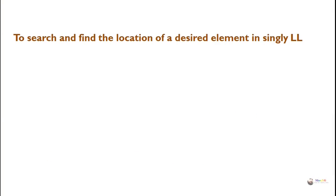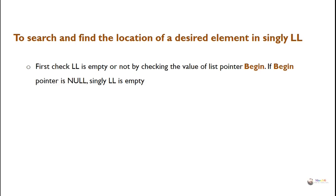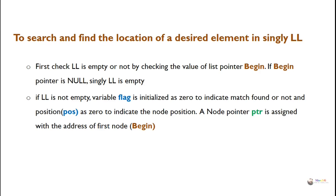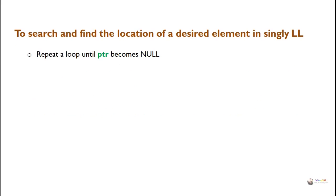To search and find the location of a desired element in a singly linked list, first check if the linked list is empty by checking the value of the list pointer begin. If begin is null, the linked list is empty. If it is not empty, variable flag is assigned as 0 to indicate whether a match is found, and position is assigned as 0 to indicate the node position. A node pointer PTR is assigned the address of the first node, i.e. begin.